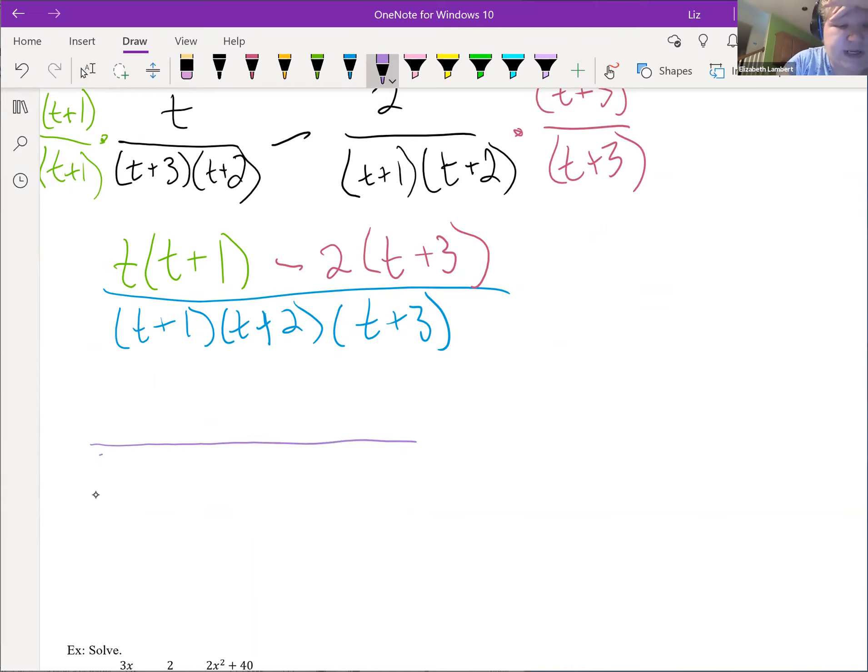T plus 1, t plus 2. It's also every time I try to do the blah, blah, blah, somebody misses when I said that. And then I have to write it in anyway. So after a while, I just write it in. So on top, we have t squared plus t minus 2t minus 6.